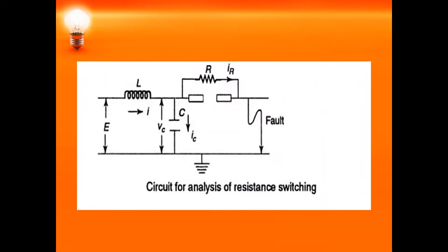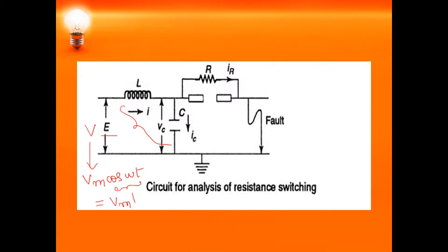To find this resistance value, we consider a circuit for analysis of resistance switching. The voltage source here is E, also written as V. Since this is a purely reactive circuit, the maximum voltage occurs at ωt = 0, so the voltage source is written as Vm·cos(ωt). Since the period of transient oscillation is very small, we assume cos(ωt) = 1, making the source constant at Vm. The resistance R is connected across the circuit breaker contacts, and we apply KVL and KCL to this circuit.